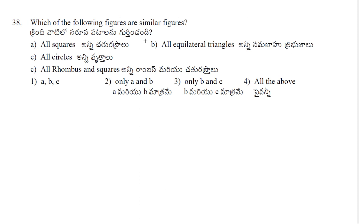Which of the following figures are similar figures? A — all squares, B — all equilateral triangles, C — all circles. All squares are similar figures, all equilateral triangles are also similar, and all circles are also similar. So all squares, all equilateral triangles, and all circles are similar. Option 1 is correct.